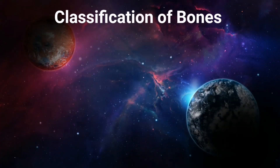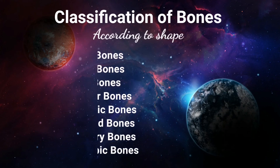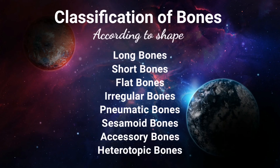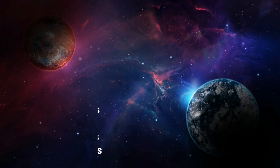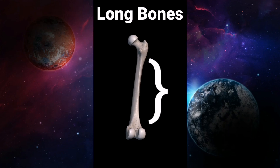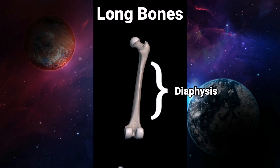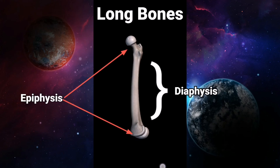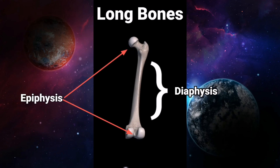Classification of bones according to shape: there are eight types of bones — long, short, flat, irregular, pneumatic, sesamoid, accessory, and heterotopic. The long bone: each long bone has an elongated diaphysis and two ends called epiphysis.